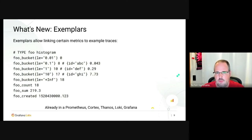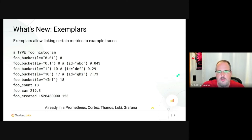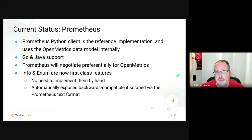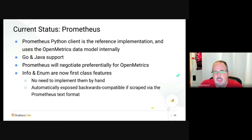Exemplars are already widely supported in Prometheus, Cortex, Thanos, Loki, Grafana, and others. The Prometheus client library is the reference implementation and uses the OpenMetrics data model internally. If you want to look at the dirty details or the reference implementation, look at the Python client — chosen on purpose because Python is easy to read and used for teaching.